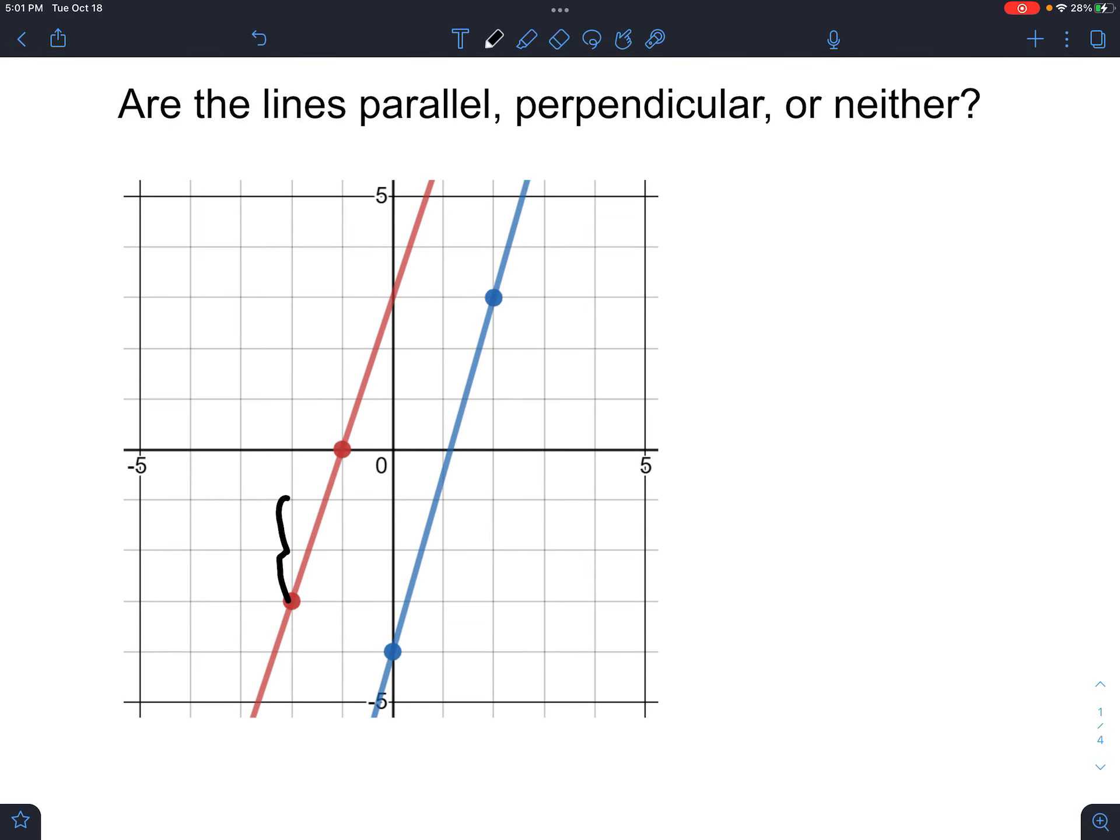Are these parallel or perpendicular or neither? Well, one, two, three, one. The slope over here, the first slope, is three over one. One, two, three, four, five, six, seven. Yep. Over two. The slope over here of the second line is seven over two. Those are not the same, and they're also not flips and opposites of each other. So, this is neither.